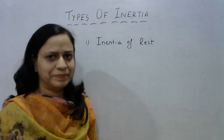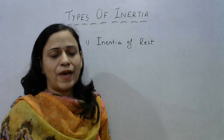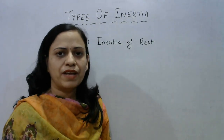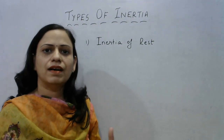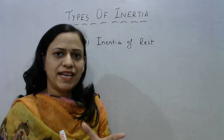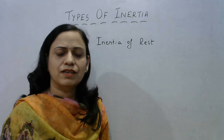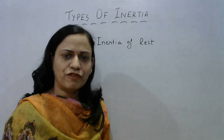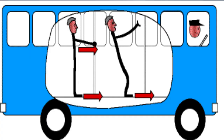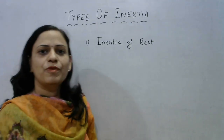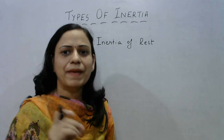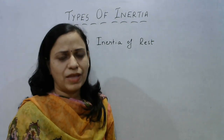Can you think of some examples related to this? When a car or a bus suddenly starts moving, we fall backwards. The reason is that the upper part of our body, which is free in air, was initially at rest along with the vehicle. As soon as the vehicle came in motion, the lower part in direct contact with the vehicle started moving, but the upper part still remained at rest due to inertia of rest — that is why we fall backwards.